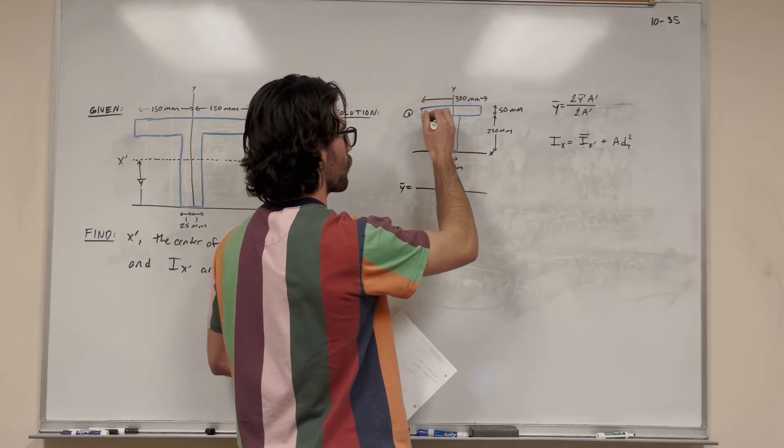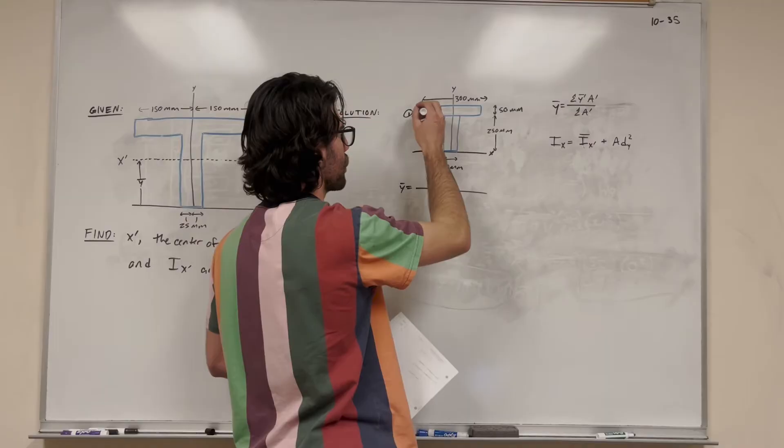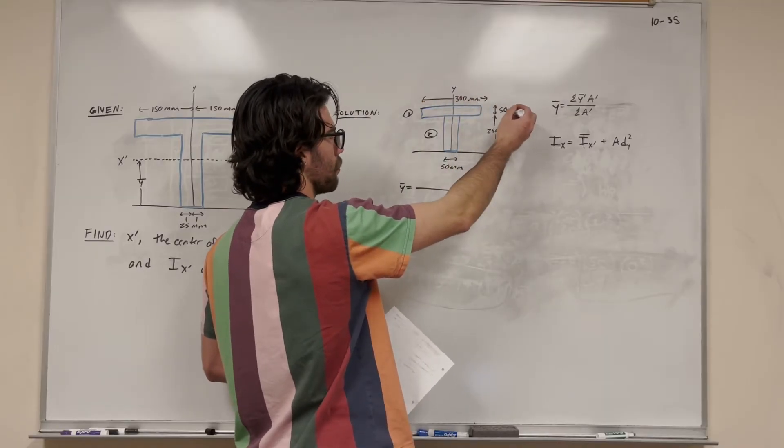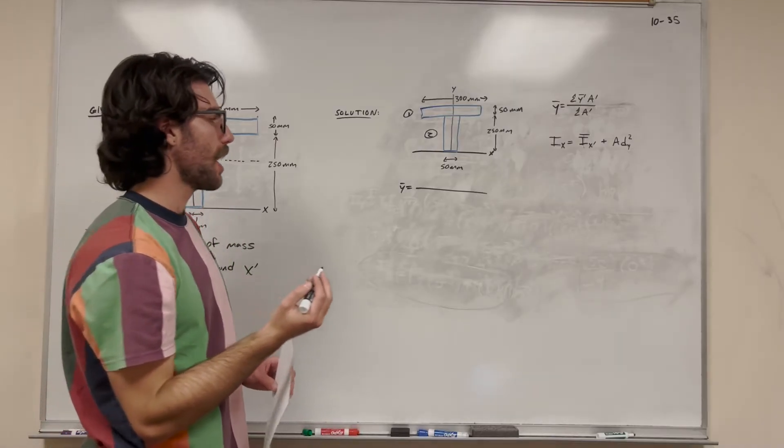So we have, let's start with number one. So we're going to start with y bar prime, which is the center of mass of this shape. So it's 50 millimeters tall, so its center is going to be half of that, 25 millimeters high.